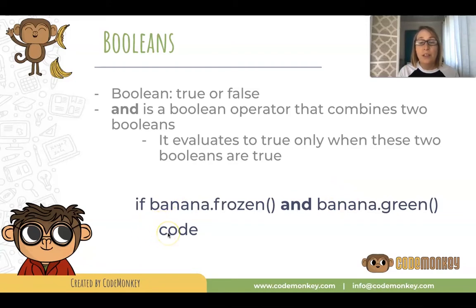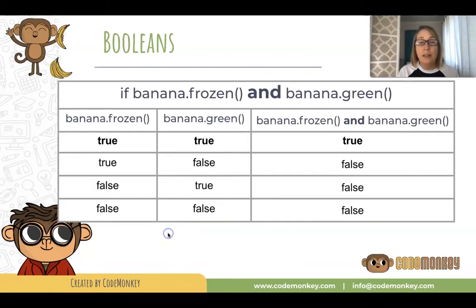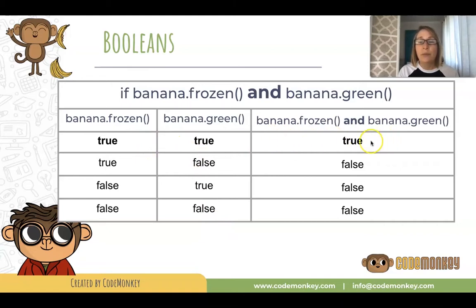Let's look at it a little bit more. Here we have a table that explains all the different possibilities and what the condition would result in. We have: if banana frozen and banana green.